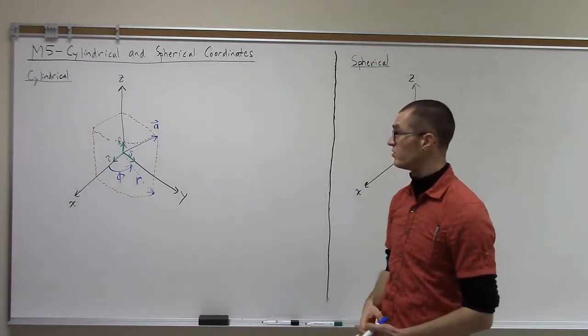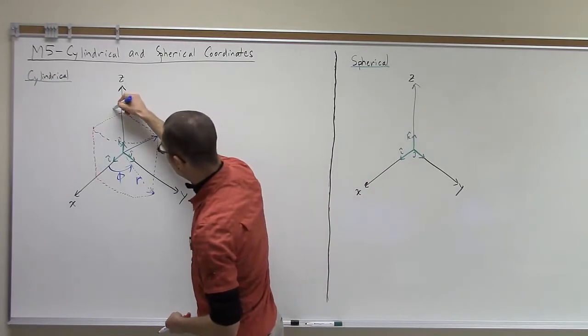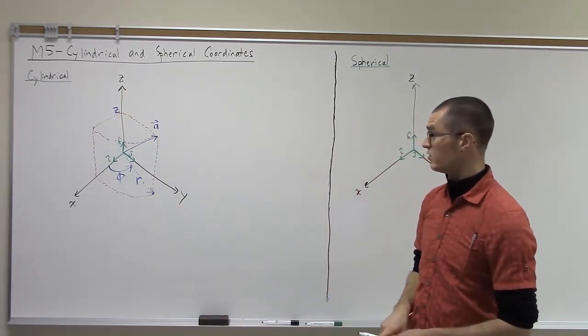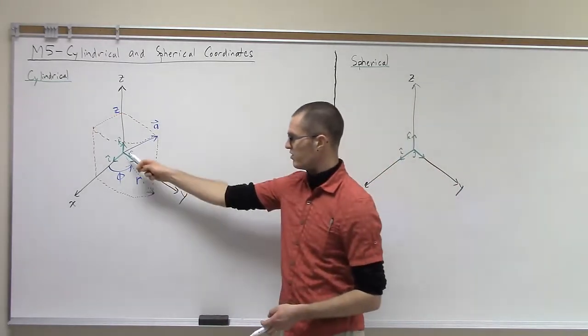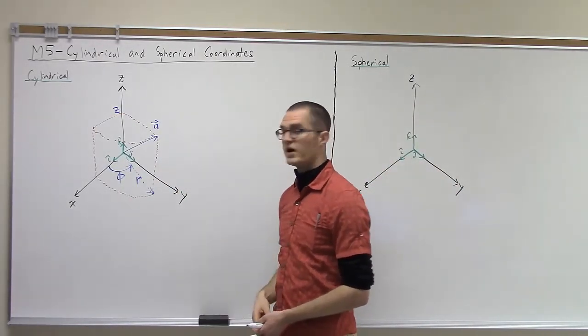In this coordinate system, the z-component is the same as it would be in a Cartesian coordinate system. However, we have a radius and an angle in the x-y plane.